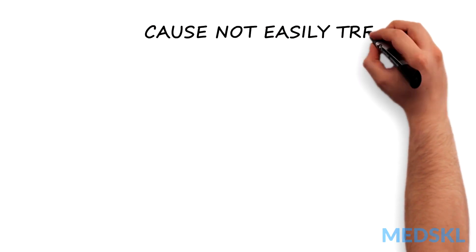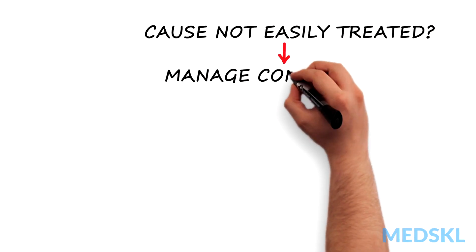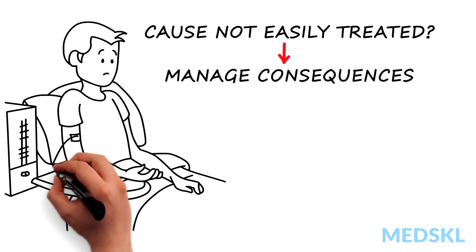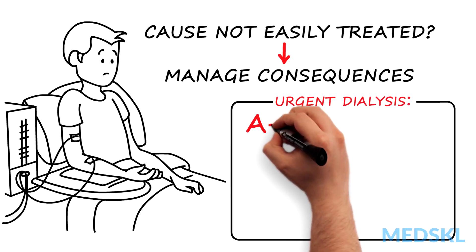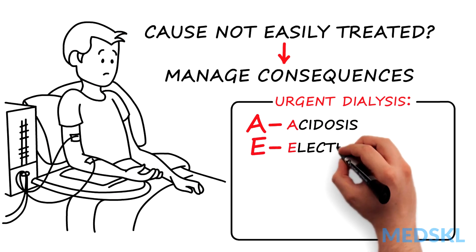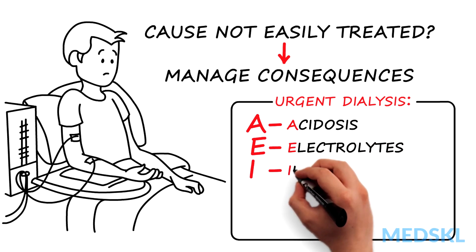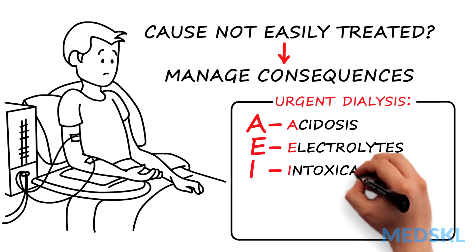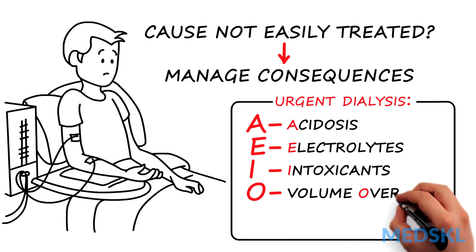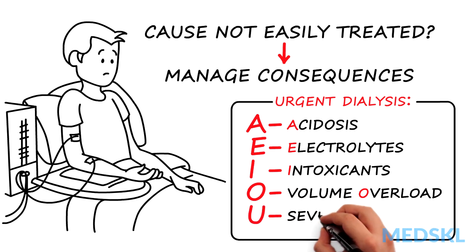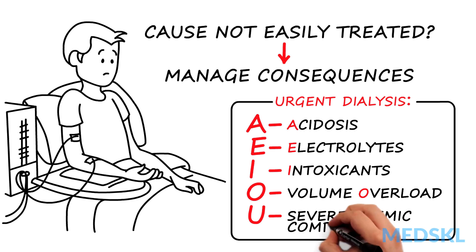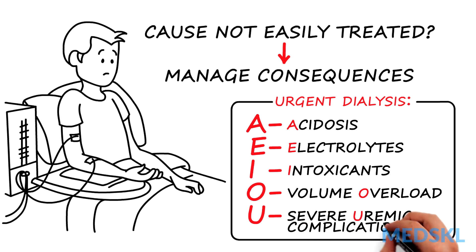If the cause of ARF cannot be easily treated, manage its consequences. Consequences that require urgent dialysis are summarized by the mnemonic AEIOU: A — Acidosis; E — Electrolytes, mainly hyperkalemia; I — Intoxicants, for example methanol, ethylene glycol, lithium, or aspirin; O — Volume overload, for example pulmonary edema; U — Severe uremic complications.